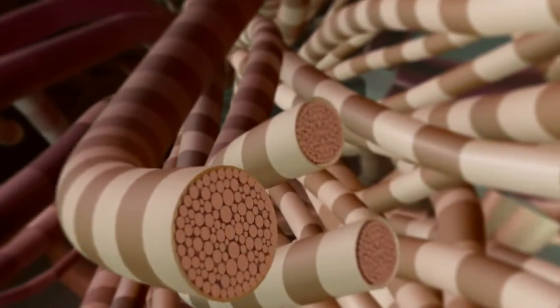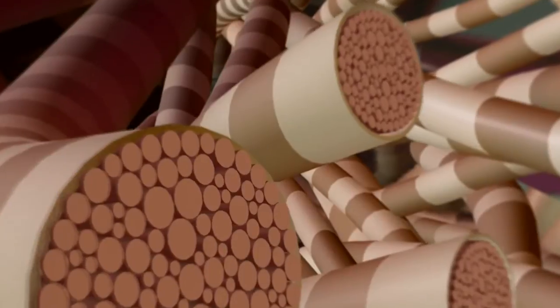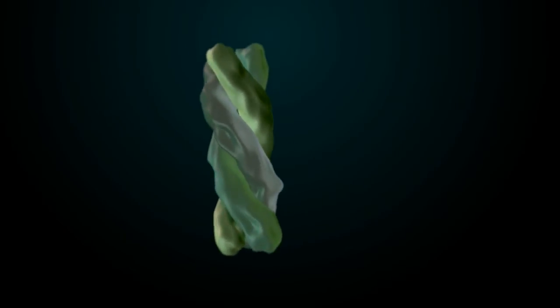But the basic structure of collagen is that it has this very unique rope-like structure. There are three different strands that come together and make a rope that is very unique to collagen.